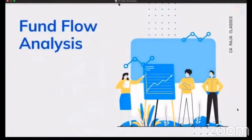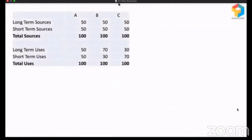I need your participation here. Look at this. There are three companies A, B, and C, and you have information about their long-term sources, short-term sources, and total sources. You also have information about their long-term uses, short-term uses, and total uses. I want you to digest this information, spend some time, and then identify which company is in trouble. Is it company A, company B, or company C?